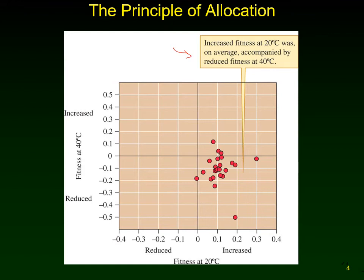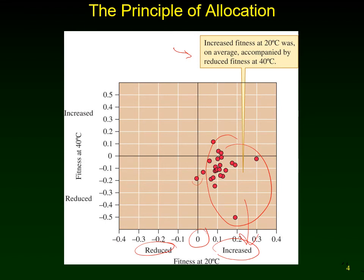Two major results stand out. First, the populations grown at 20 degrees Celsius had higher positive fitness at 20 degrees compared to their ancestors — showing that lines grown at 20 degrees for 2000 generations had adapted to that lower temperature. Looking at the x-axis, we compare fitness at 20 degrees versus the original ancestral lines. If they're doing the same, there's no change in fitness; if they grow faster, fitness increased. In general, everything except one population showed improved fitness at 20 degrees.